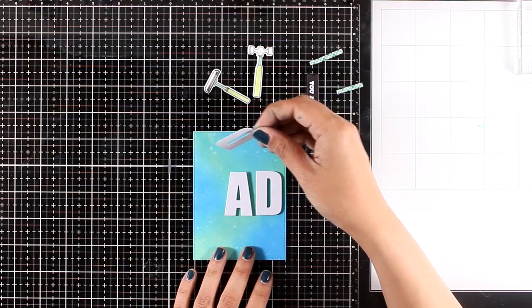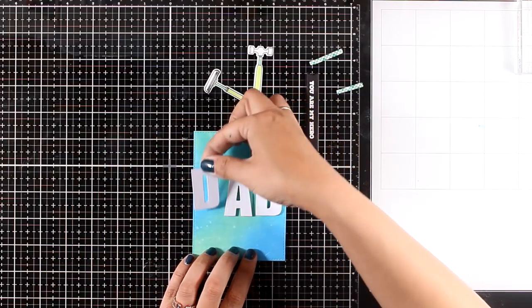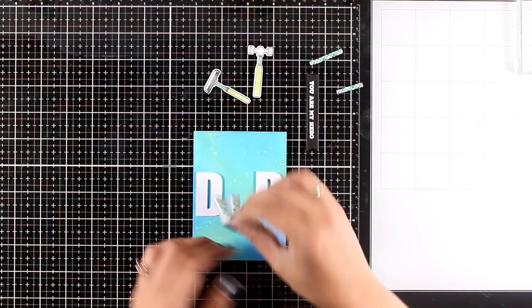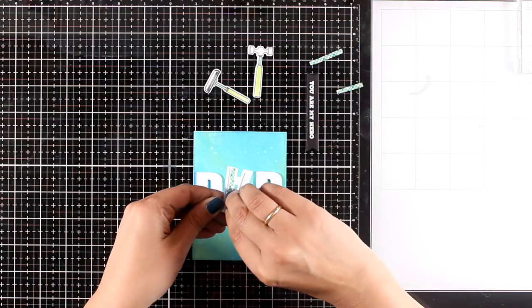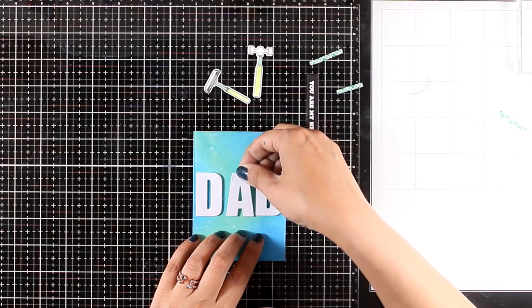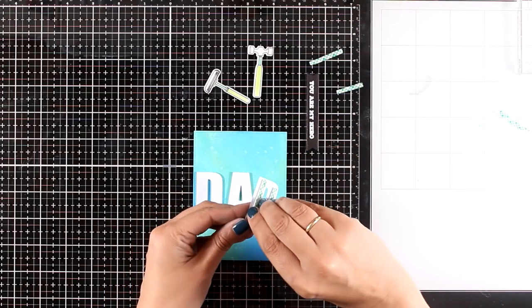I've added some thin strips of foam tape at the back of my letters. I'm going to stick them on top of my panel pretty much at the center.